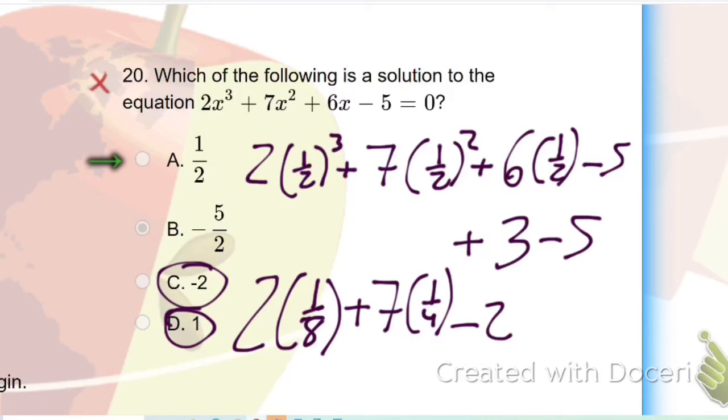And from there you could go ahead and multiply straight over. So I get 2/8 or right here plus 7/4 minus 2. Now we want it to equal 0. So I'm hoping that that's what's going to happen.